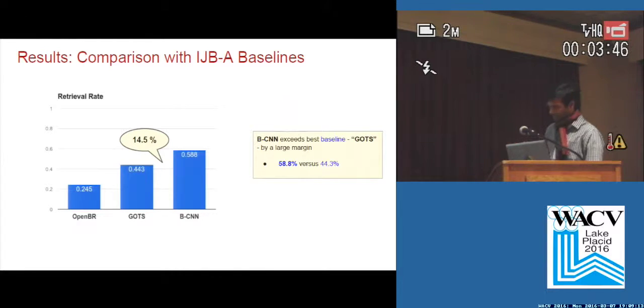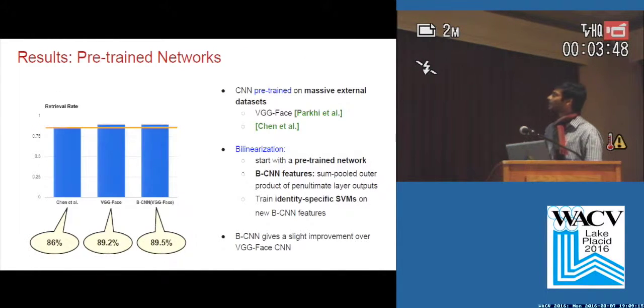We exceed the baseline by a large margin. And when using massively external datasets that have become available nowadays, we see that the improvement is slightly lesser because we need to fine-tune the new bilinear model.